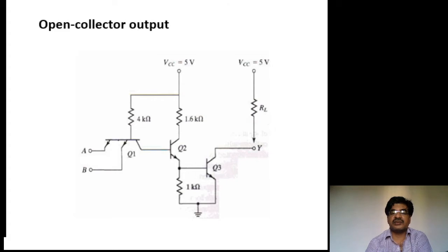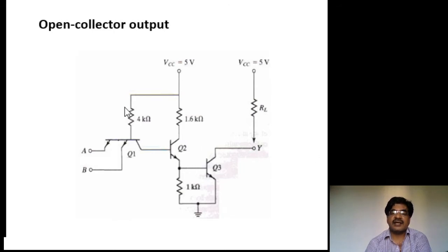That network acts as a two-input AND gate followed by transistor Q3, which acts as an inverter — AND gate followed by NOT gate — so totally it acts as a NAND gate.